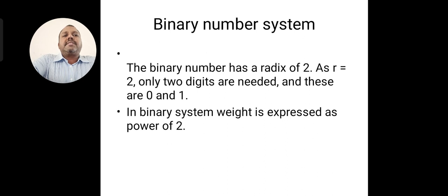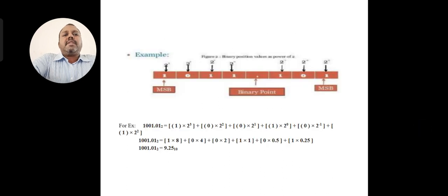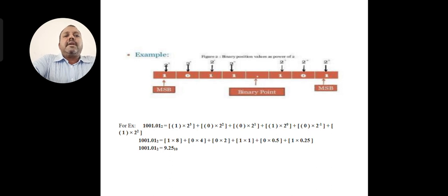Binary number system: the binary number system has a radix, or base value, of 2. The radix is shortly represented by r, so r equals 2. Only 2 digits or 2 symbols are used, that is 0 and 1. In the binary system, weight is expressed as a power of 2. For example, consider the binary value 1001.01 — a mixed value. Each digit is multiplied by a power of 2 and then added together to get the final result. The exponent values after the decimal point are represented by negative powers, and the final result is 9.25 in base 10.